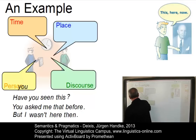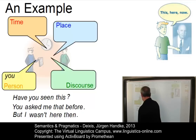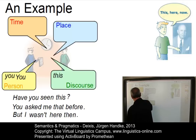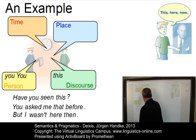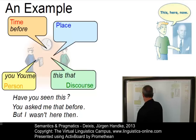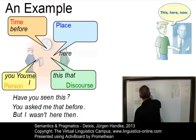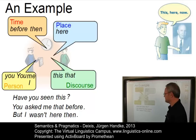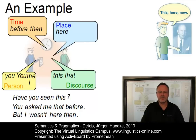First of all, we can associate 'you' with person deixis. 'That' is clearly an element of discourse deixis. Here we have another 'you' — another element that relates to a person. The same applies to 'me'. Then 'that' is another discourse deixis element. 'Before' is clearly temporal, so it's time deixis. 'I' is again person deixis. 'Here' relates to the place. And 'then' is another element of time deixis. This is how to analyse a little dialogue in terms of deictic elements.